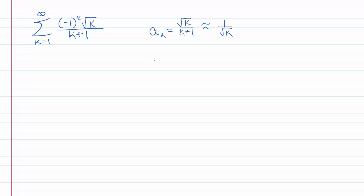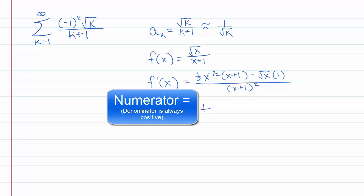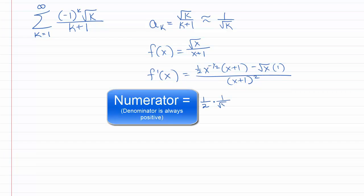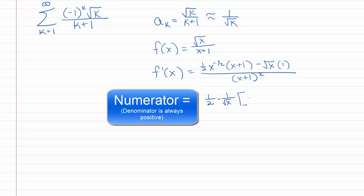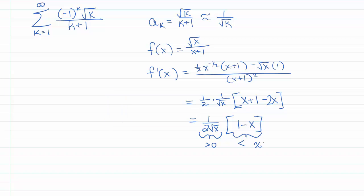The first thing is: is a sub k non-increasing? So f of x equals square root of x over x plus 1 — let's take the derivative, f prime of x. It's going to be 1 half x to the negative 1 half times the bottom, minus top times the derivative of the bottom, all over the bottom squared. Pulling out 1 half times 1 over square root of x, we get x plus 1 from the first term, and pulling out 1 over square root of x gives minus x. So this gives 1 over 2 square root of x times 1 minus x. Since 1 over 2 square root of x is always positive and 1 minus x is always negative for x greater than 1, so it's decreasing.